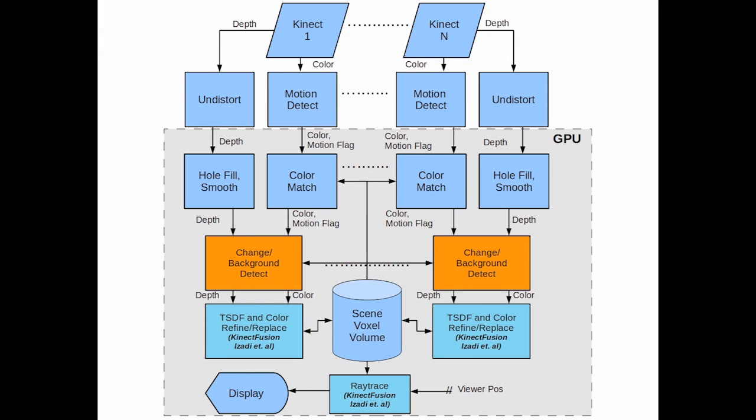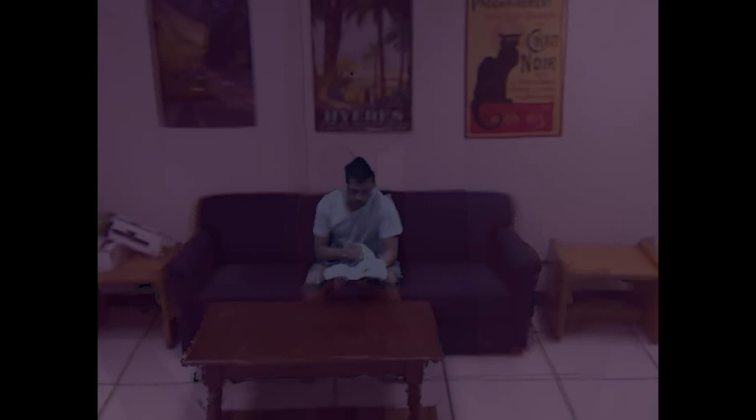A 3D background model is stored within the volume to further reduce noise and allow occluded background objects to be retained over time. This sequence shows a segmentation of the learned background, displayed in pink, and the foreground, displayed in blue. Cyan indicates detected scene changes.